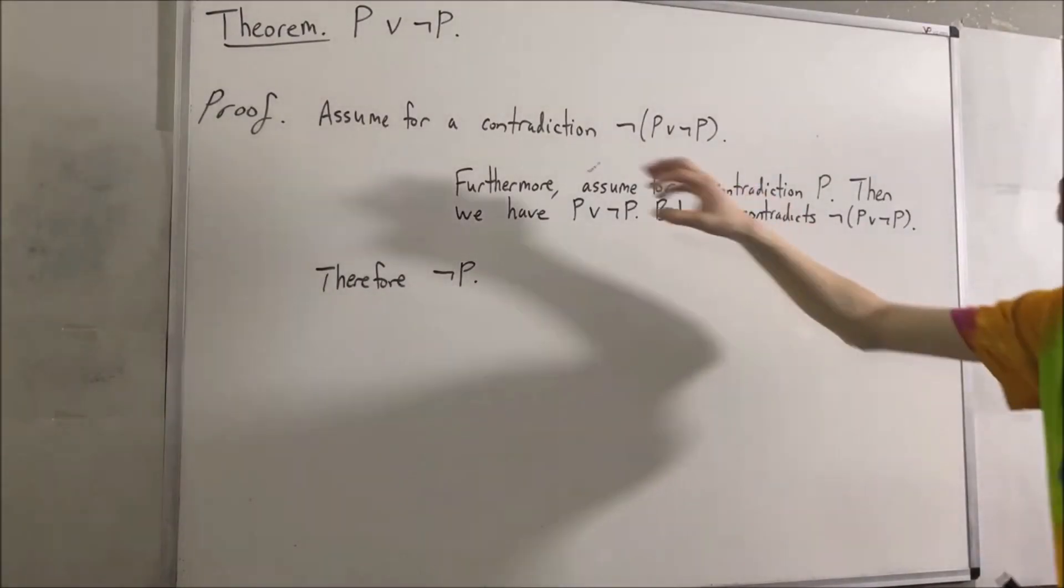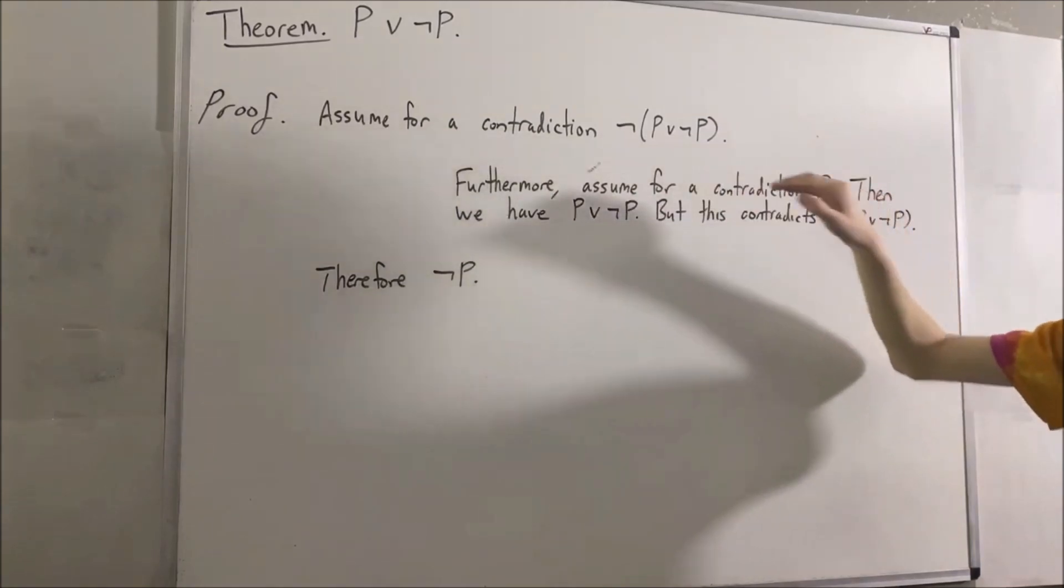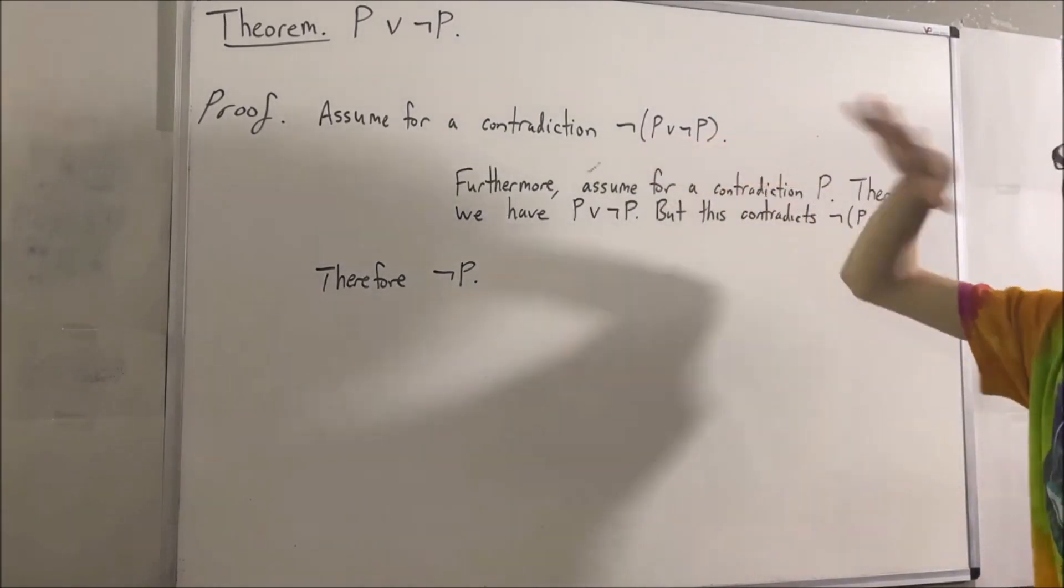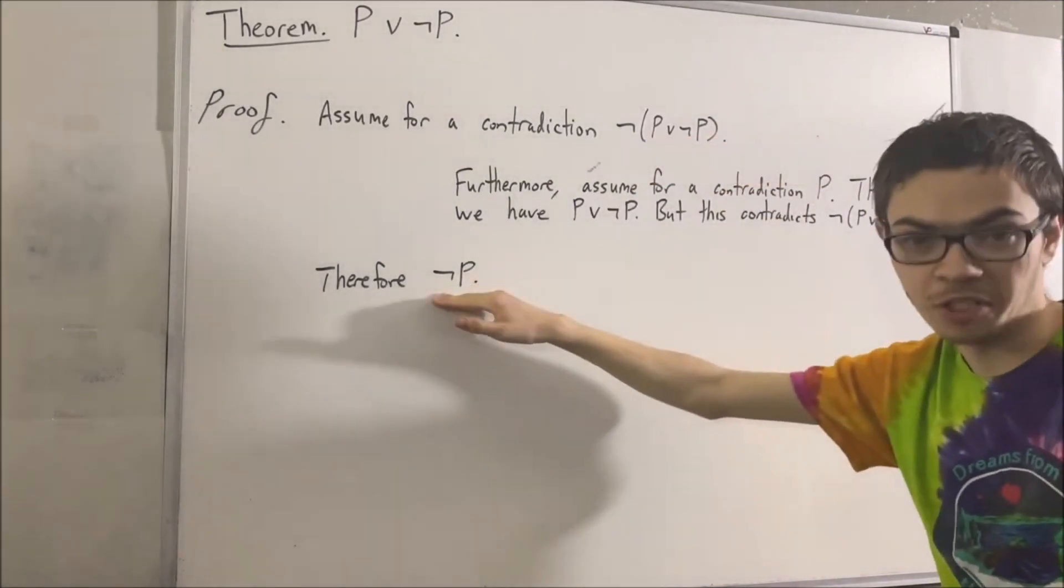So by using a contradiction, we showed that if this is true, then we must have that not P is true.